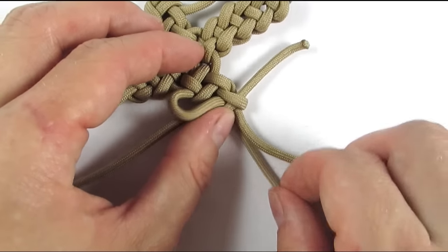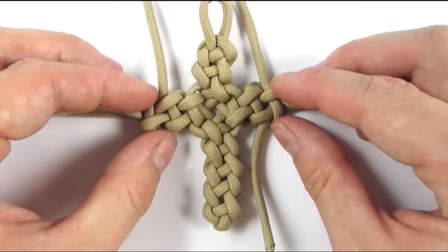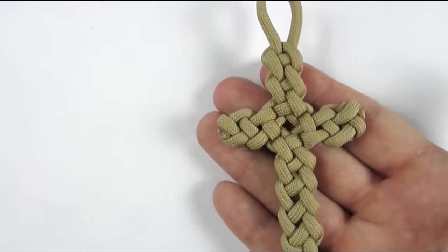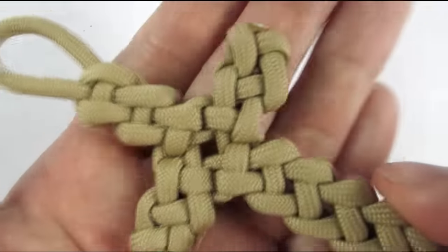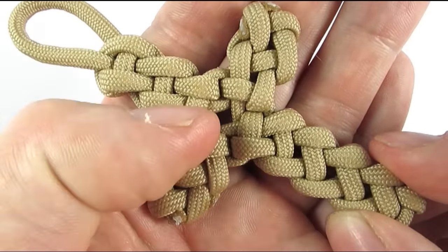So after tying all of the knots, it is time to simply cut all of the cords and you will have a nice looking paracord cross. Here you can see a tighter version that I usually make and you can see the nice center with an over one, under one alignment.